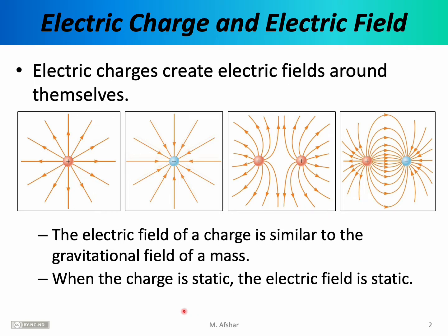If the charged particle is at rest, the electric field will also be static. If the charged particle is moving — for example, if the proton is moving in a particular direction — then the electric field will also move, since the field lines must emanate from and follow the source. In particular, if the charged particle begins to oscillate, then the electric fields will also begin to oscillate, and that's what we refer to as electromagnetic waves.